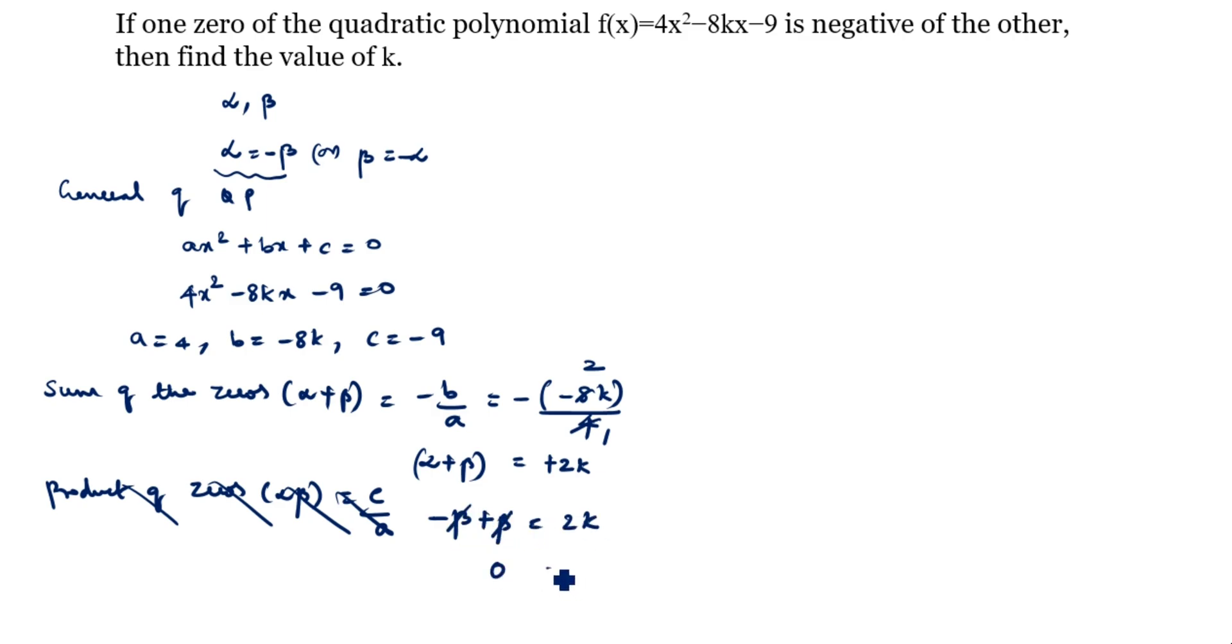This beta and this beta cancel. 0 = 2k, so k = 0. What is the value of k? The k value is 0.